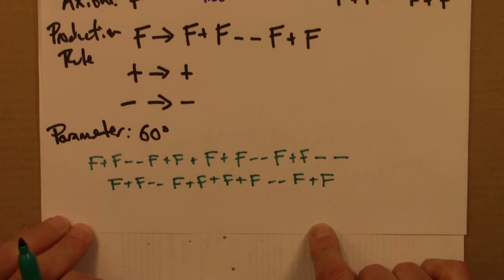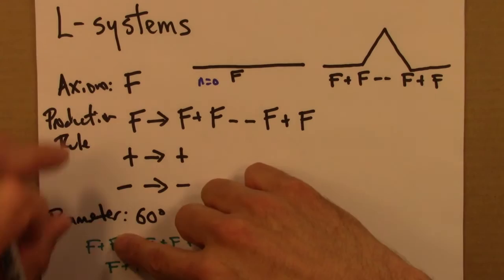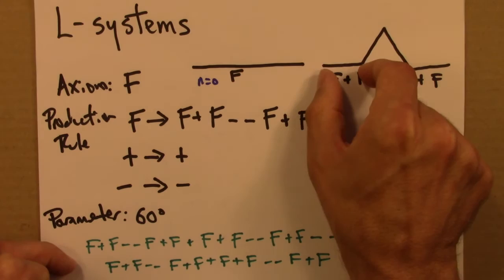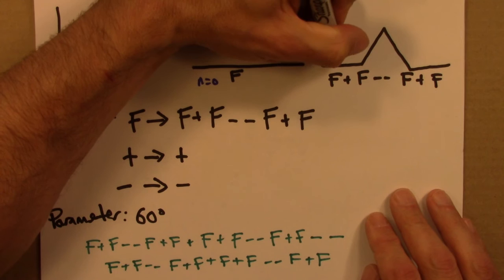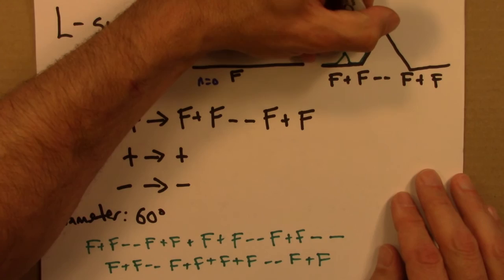So that's F plus F minus minus F plus F plus F minus minus F plus F. This long set of instructions would give us the next step in the Koch curve. We could do that, and in this form of an L-system, the shape would get larger every time. I'm going to scale it down so that it fits. F plus turn up to the left, plus two turns to the right, draw another F plus turn to the left, and so on.